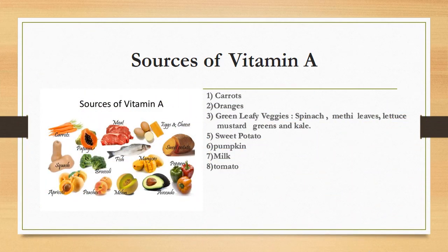Main sources of vitamin A are carrots, oranges, green leaf veggies like spinach, methi leaves, lettuce, mustard greens, and kale, sweet potatoes, pumpkin, milk, and tomatoes.